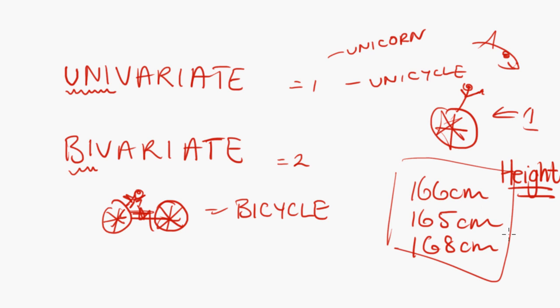What I've collected up is one piece of information about them and that is their height. So one variable, one piece of information, this would be univariate data.